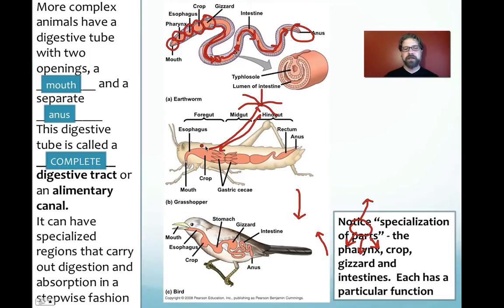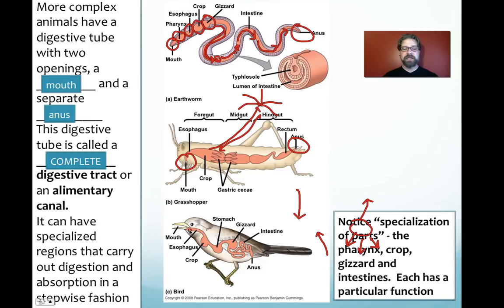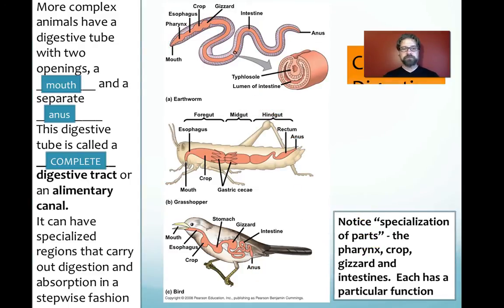A grasshopper similarly has multiple specialized parts, and importantly for a complete digestive tract, both mouth and anus openings. Birds show the same types of parts — an esophagus connecting the mouth to the crop, a stomach, a gizzard — and food eventually reaches the anus. That too is a complete digestive tract.